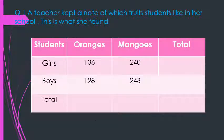The word problem given here is: a teacher kept a note of which fruits students like in her school. This is what she found, and to the reference of this question, one table is given here. So to solve this type of word problem, you need to understand the table first of all.